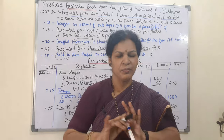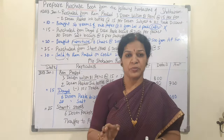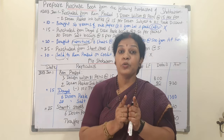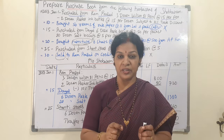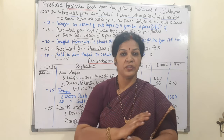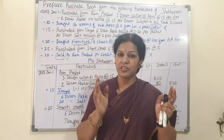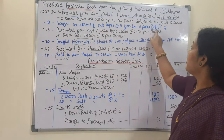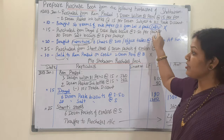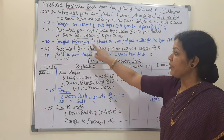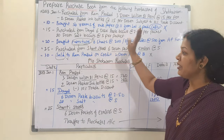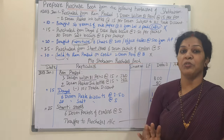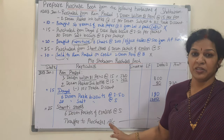Let me explain simply. When preparing the purchase book, remember: it should be goods purchased and credit transactions only. Cash purchases — don't take. Asset purchases — don't take. In this problem: transaction 1 was valid; transaction 2 (January 10th) was cash — ignored; transaction 3 (January 15th) was valid; transaction 4 (furniture) — ignored; transaction 5 (January 25th) was valid; transaction 6 (sales) — also not required.